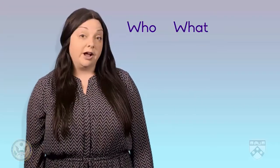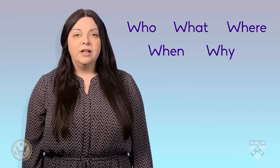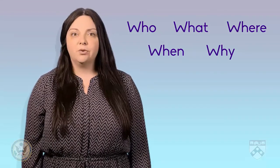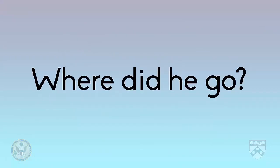Question words are those WH words we mentioned earlier: who, what, where, when, and why. The helping verb tells the listener the tense or purpose of the question. For example, 'Where did he go?' Here, 'where' is our question word and 'did' is our helping verb. The helping verb tells us that this question is about the past.